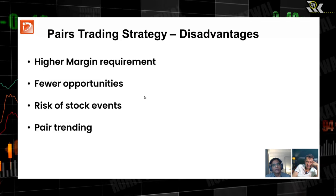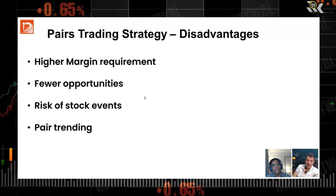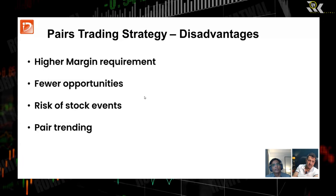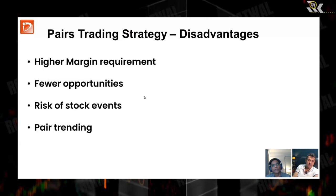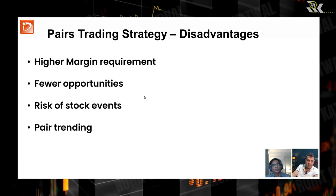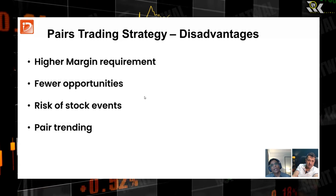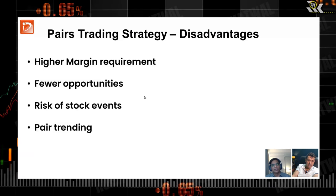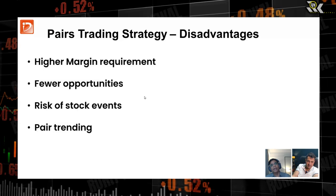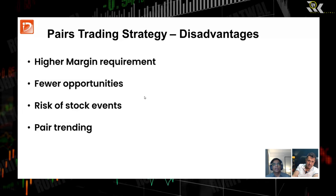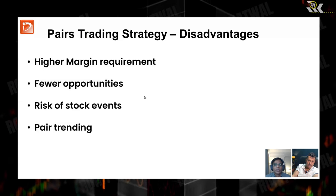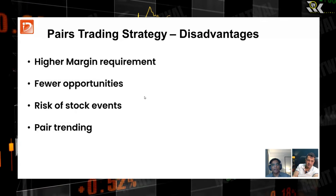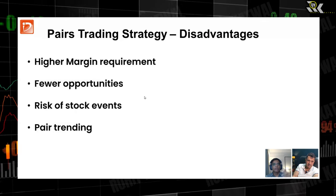Definitely for mean reversion, this strategy is very good — because 70% of the time the market is sideways, and this strategy takes exact benefit of that. It is kind of complementary to trending strategies — it is a mean-reverting strategy. So if there is a huge divergence and you already know historically that this is a very good pair, then go for it.